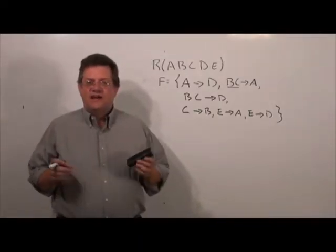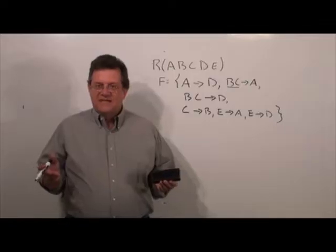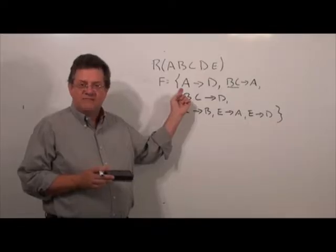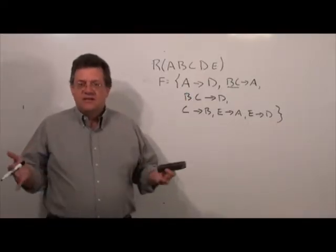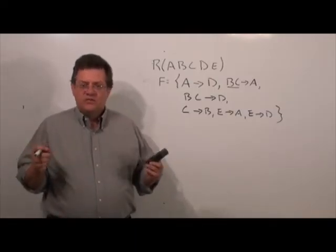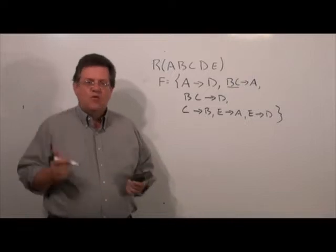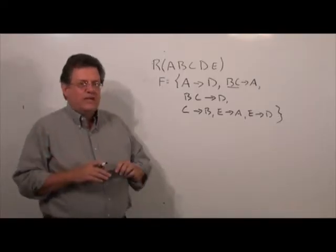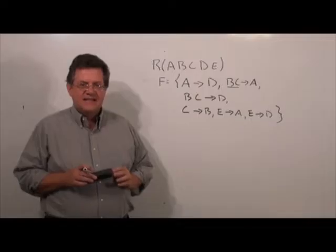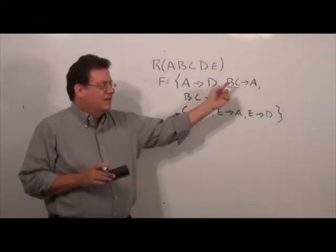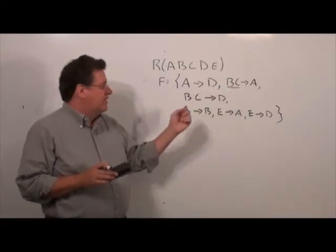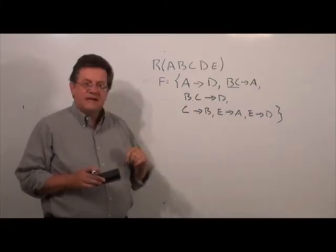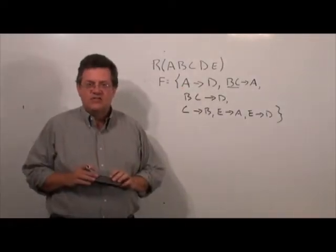Our next step is to see whether or not we have any extraneous attributes on the left-hand side. If a functional dependency has only one attribute on the left-hand side, you cannot eliminate it. So we look for functional dependencies with two or more attributes on the left-hand side. We do this one functional dependency at a time, starting with B C → A.